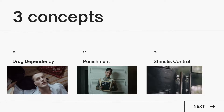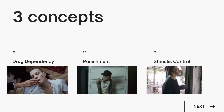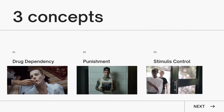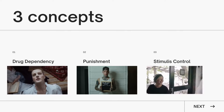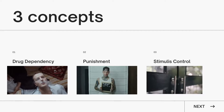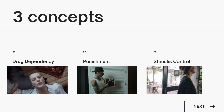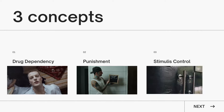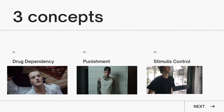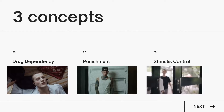The three concepts I will be talking about today are drug dependency, punishment, and stimulus control. Each of these concepts has something to do with learning, whether we know it or not. Looking at the graphics, we can see a hint of what we'll be talking about: the drug dependency graphic shows someone smoking a cigarette, punishment shows someone being put in jail, and the last one shows two people opening a door. Later in the video, we'll go into more detail about what each of these things mean.